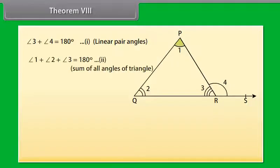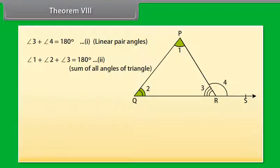Also, angle 1 plus angle 2 plus angle 3 equals 180 degrees because the sum of all the angles of a triangle is 180 degrees. Mark it as equation 2.